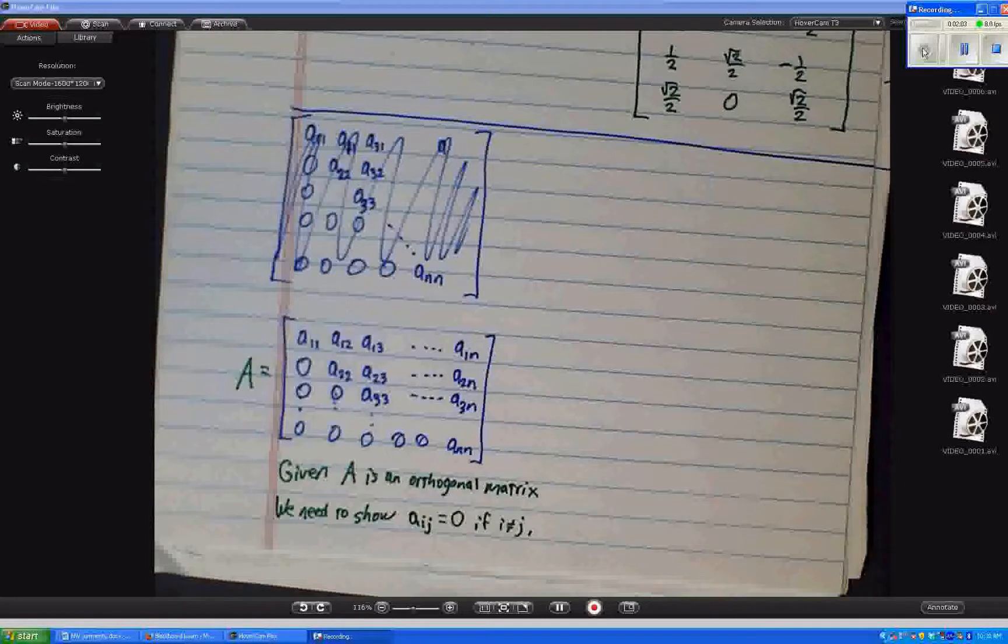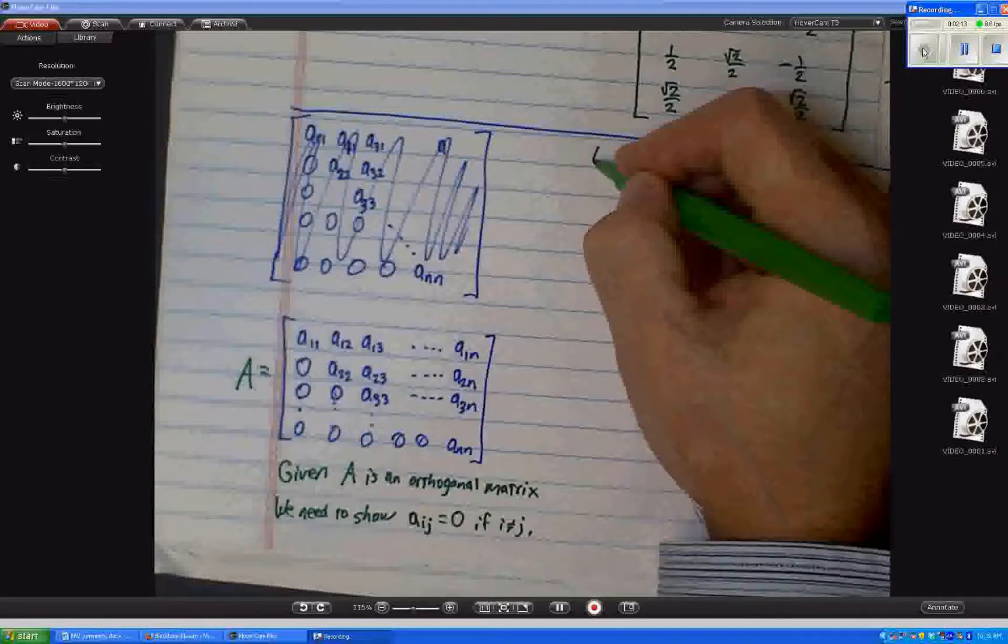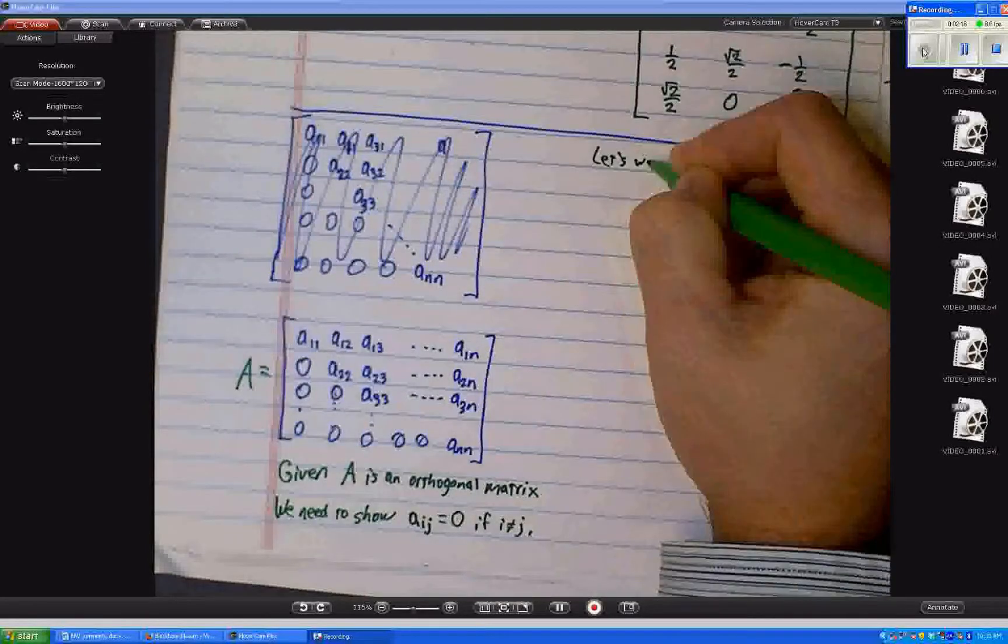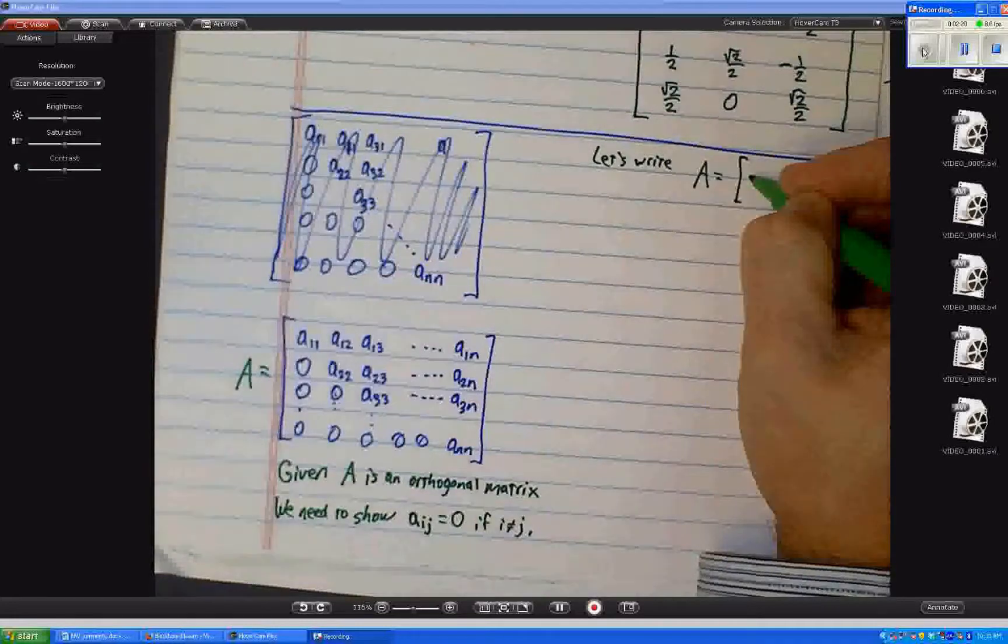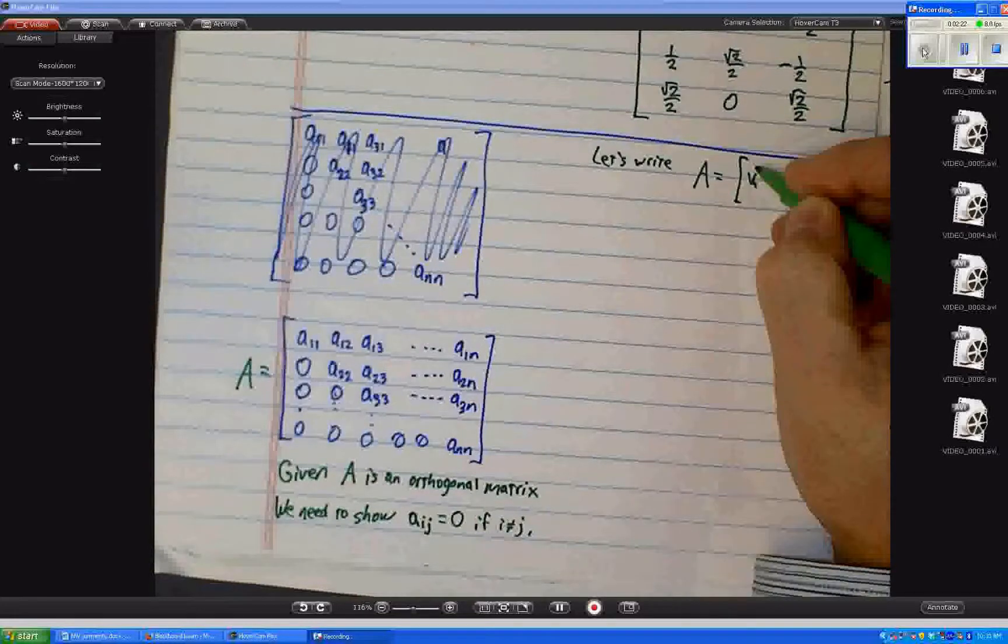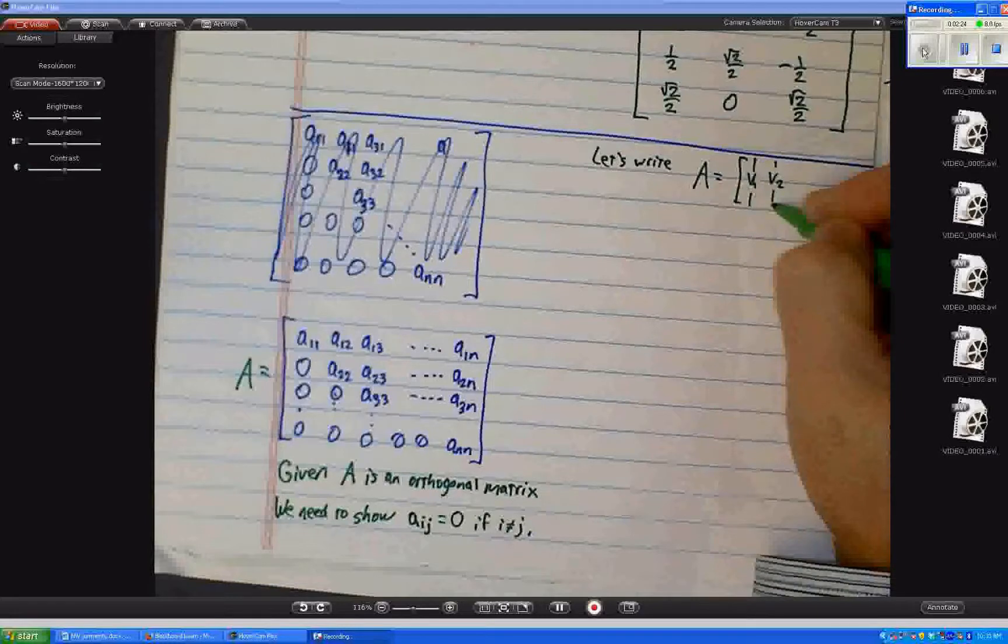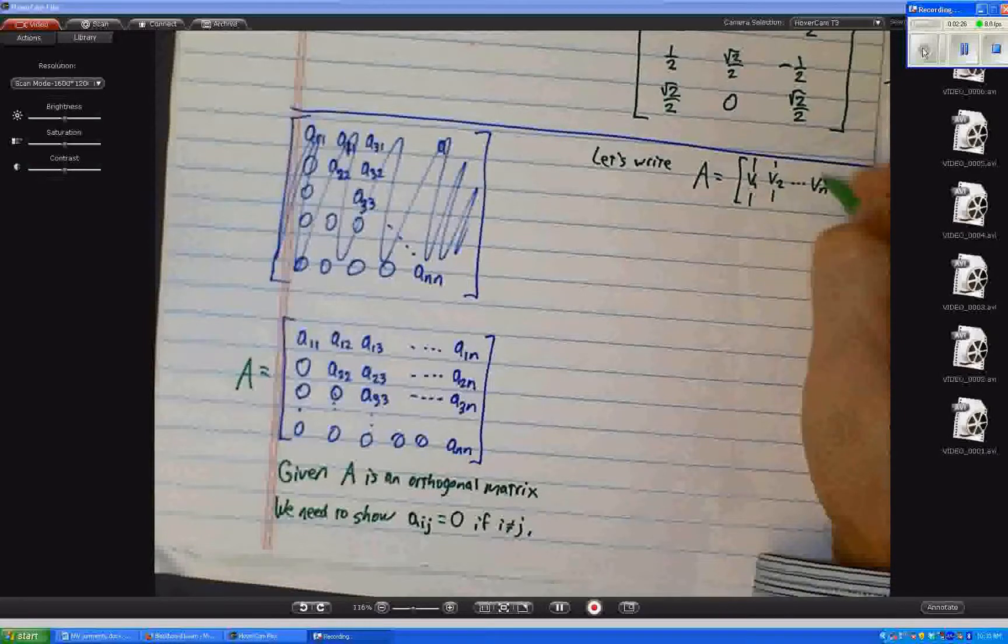So maybe another thing to do, to do this proof would be this. Let's write that matrix A is also this: V1, V2. It's a bunch of columns. There's N columns.